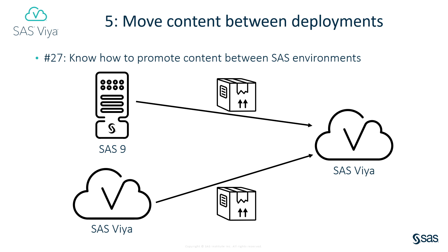Number 5: Move content between deployments. SAS Viya Administrators who are upgrading from SAS 9 need to know what content can be moved from SAS 9 into SAS Viya and how to move it. Administrators with more than one SAS Viya deployment, or who are migrating to a new deployment, need to know what content can be promoted between SAS Viya deployments and how. See Task 27 for more on this. Think carefully before promoting permissions, authorization rules, or access controls with your content and data. It may be simpler and more straightforward to not promote those things and design an authorization model in your target environment separately.